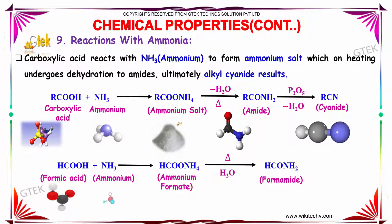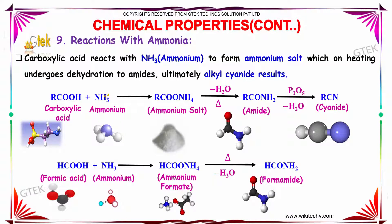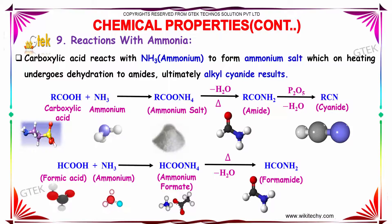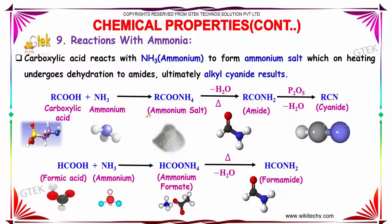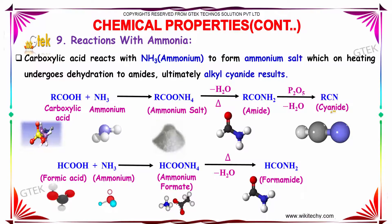Carboxylic acid reacts with ammonia to form ammonium salts, which on heating undergoes dehydration to amides. Ultimately, alkyl cyanide results. Carboxylic acid reacts with ammonia to form an ammonium salt, which on hydrolysis and heating produces an amide. Furthermore, addition of P2O5 gives the cyanide, that is R-CN.